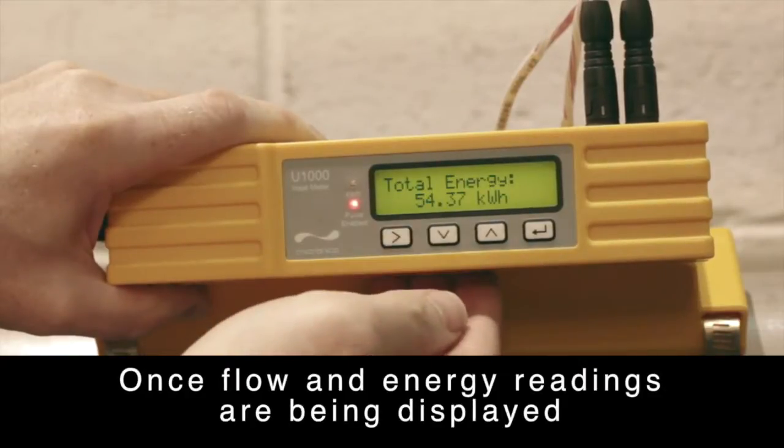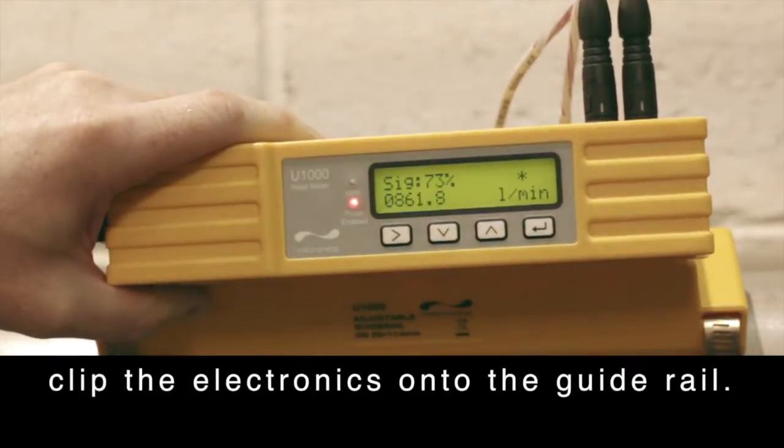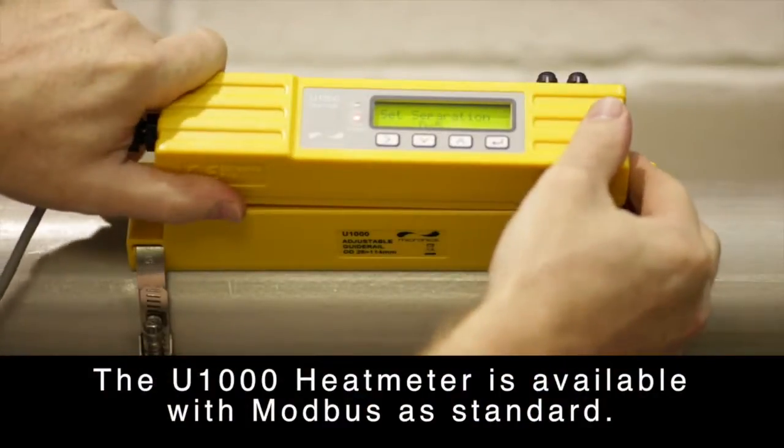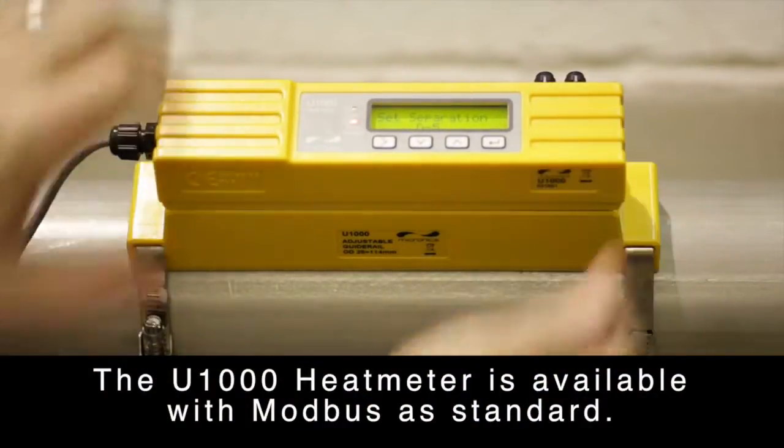Once flow and energy readings are being displayed, clip the electronics onto the guide rail. The U1000 heat meter is available with Modbus as standard.